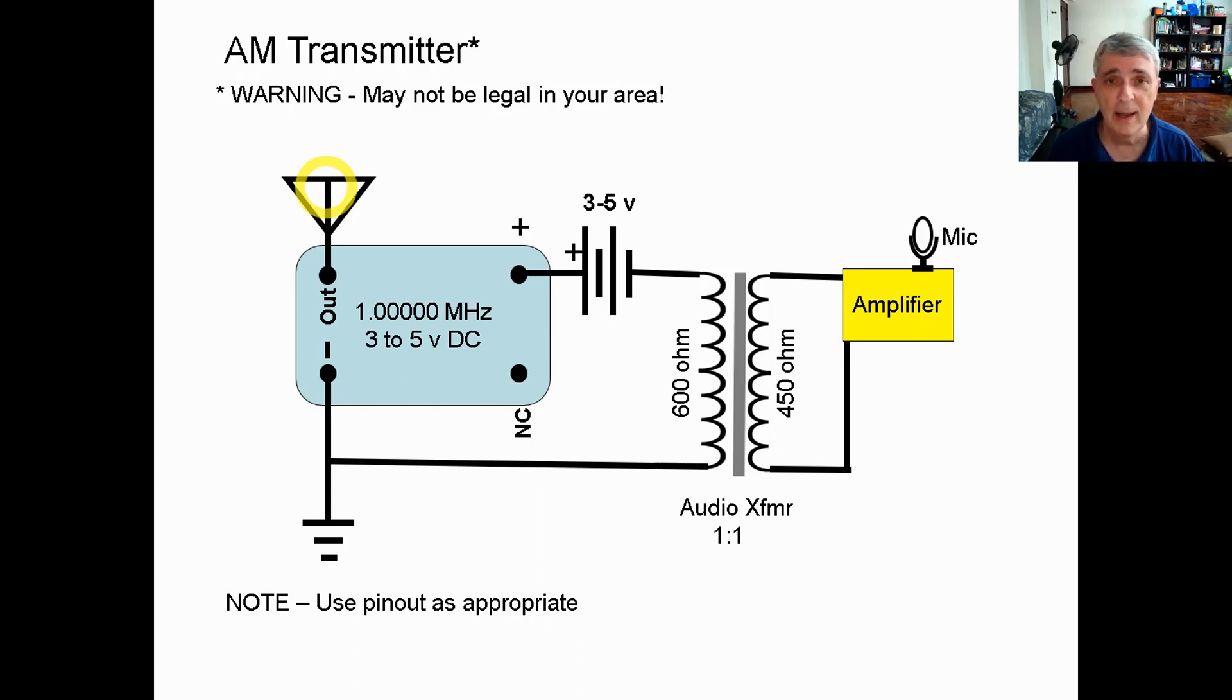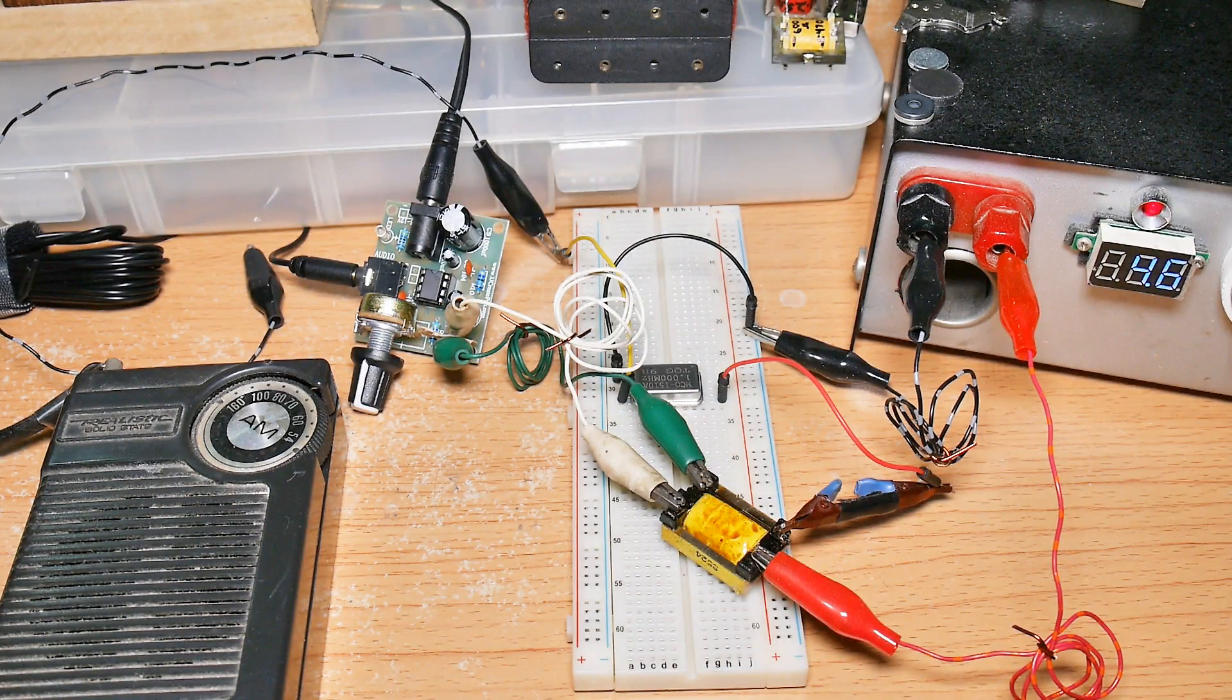That's what an AM transmitter does. We have a carrier wave and we have a way of causing that carrier wave to change in size. And that's it. Very simple to create, very simple to understand.